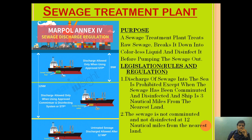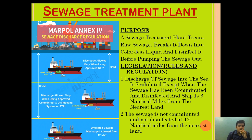There are rules and regulations we need to follow for discharging sewage into the sea. The first rule states that discharge of sewage into the sea is prohibited except when the sewage has been comminuted and disinfected and the ship is three nautical miles from the nearest land. If we have an approved sewage treatment plant and the sewage has been disinfected and comminuted — broken down into a colorless liquid — we can discharge it at three nautical miles away from the nearest land, confirmed from the bridge.